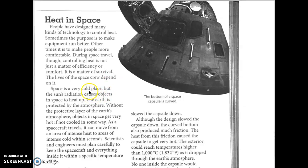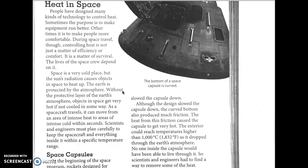Space is a very cold place, but the sun's radiation causes objects in space to heat up. The earth is protected by the atmosphere. Without the protective layer of the earth's atmosphere, objects in space get very hot, if not cooled in some way. As a spacecraft travels, it can move from an area of intense heat to areas of intense cold within seconds. Scientists and engineers must plan carefully to keep the spacecraft and everything inside it within a specific temperature range.